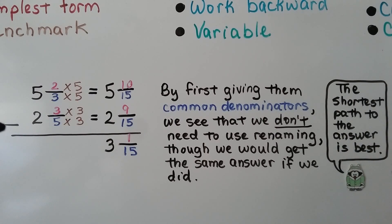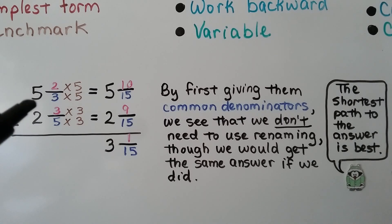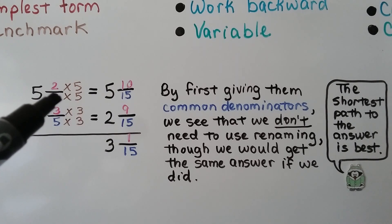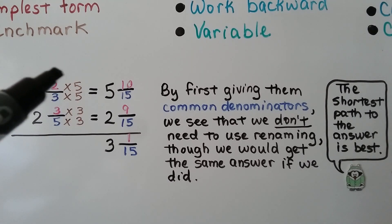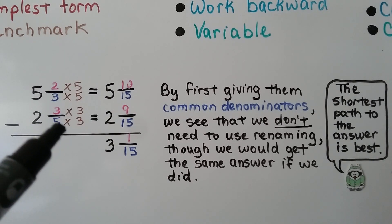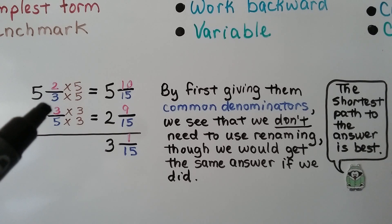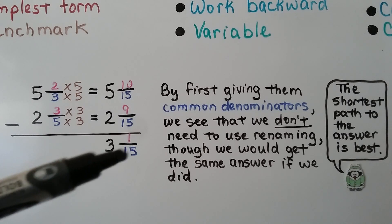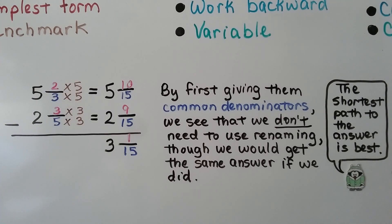Here we have 5 and 2 thirds minus 2 and 3 fifths. We see the denominators are different. We need to give them a common denominator first — we can multiply 3 times 5 to use 15 as a common denominator. 3 times 5 is 15, so we multiply the numerator 2 by 5 to get 10. 5 times 3 is 15, so we multiply this numerator by 3 to get 9 fifteenths. We can subtract 10 minus 9 to get 1 — that's 1 fifteenth. And 5 minus 2 is 3. By first giving them common denominators, we see that we don't need to use renaming, though we would get the same answer if we did.